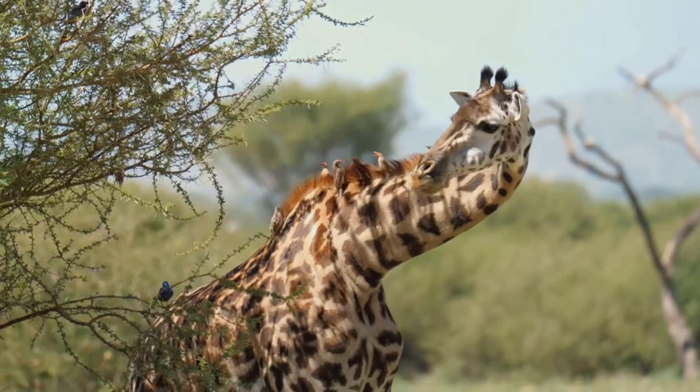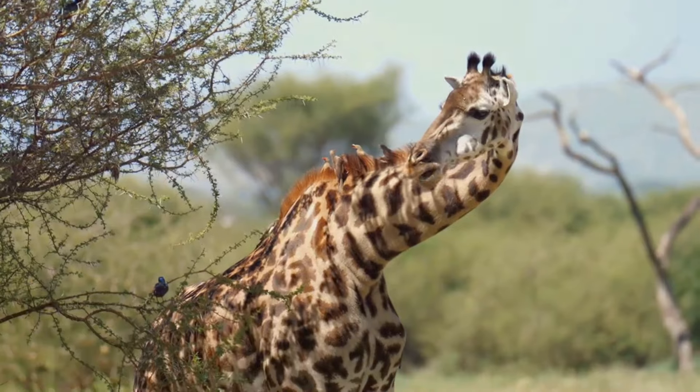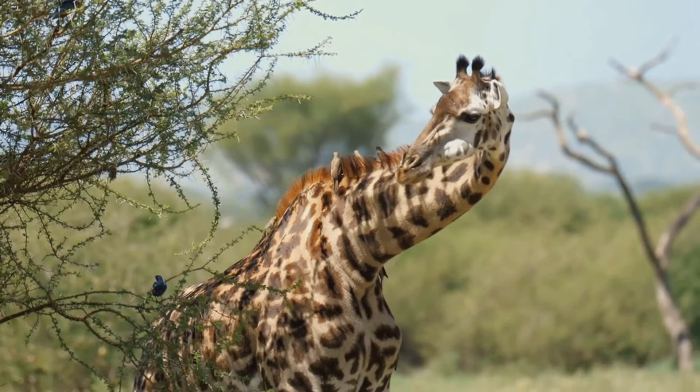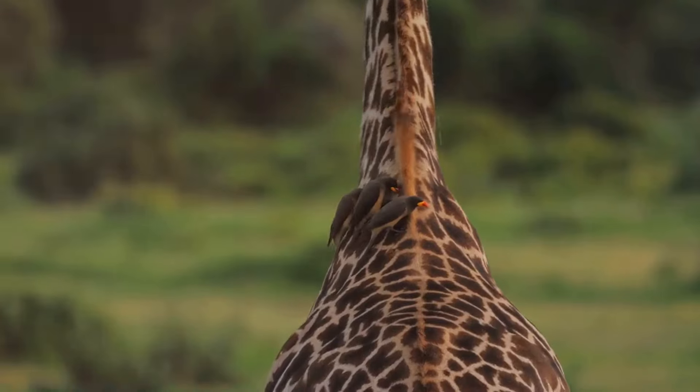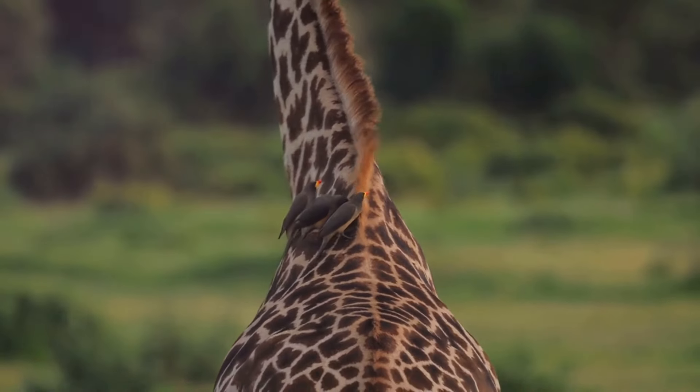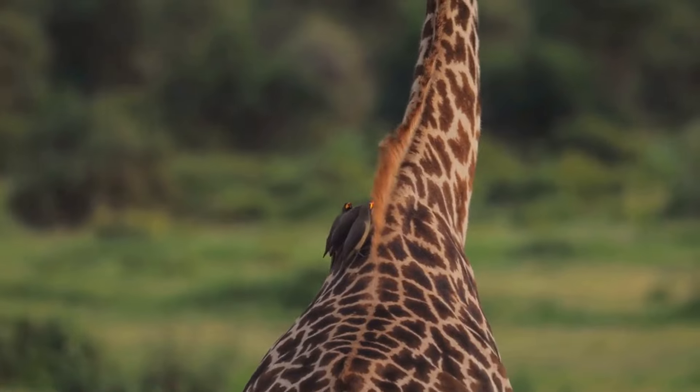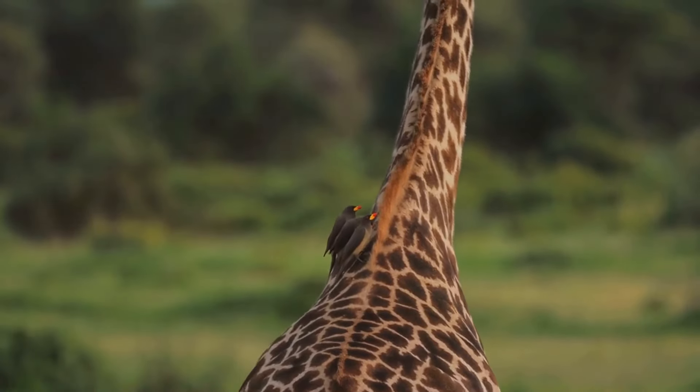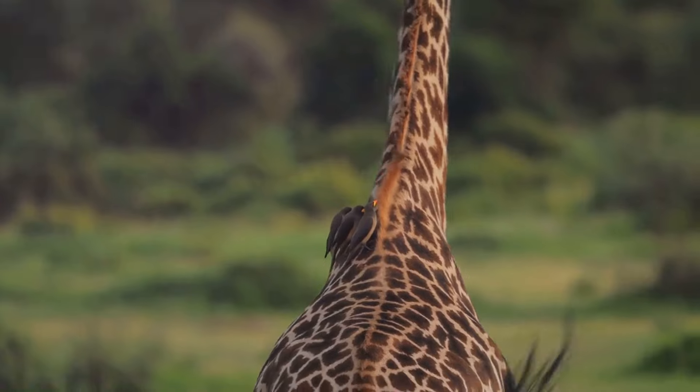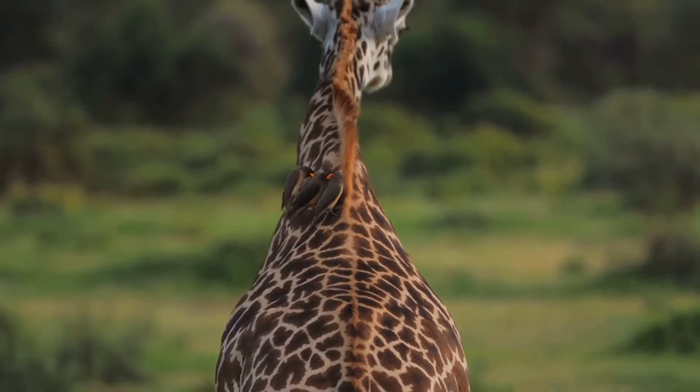On the other hand, the theory of natural selection was Darwin's explanation for how evolution occurs. In a nutshell, it's survival of the fittest. Organisms that are better adapted to their environment are more likely to survive and reproduce, passing down their advantageous traits to the next generation. This process, over time, leads to the evolution of species.